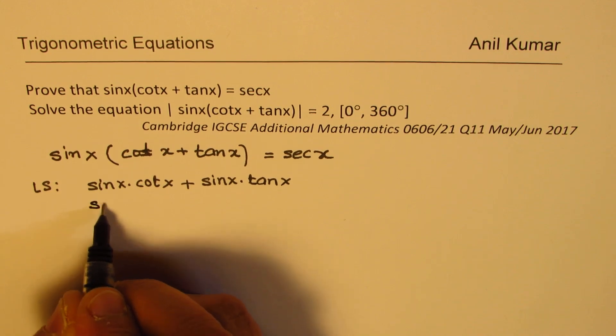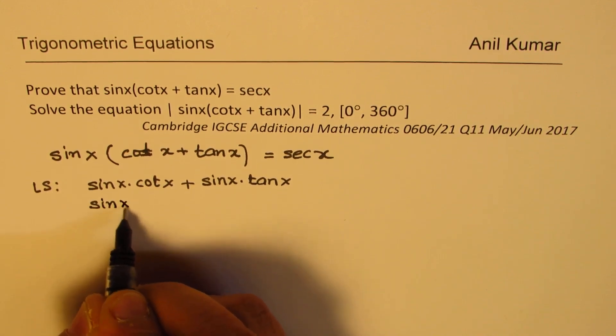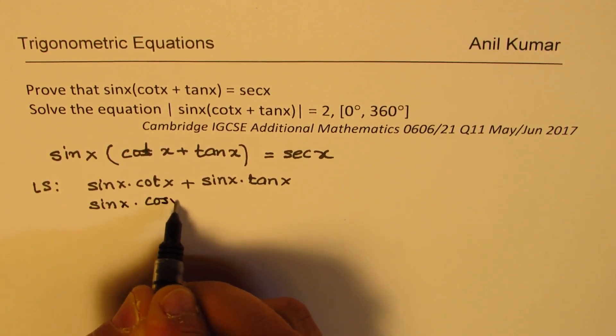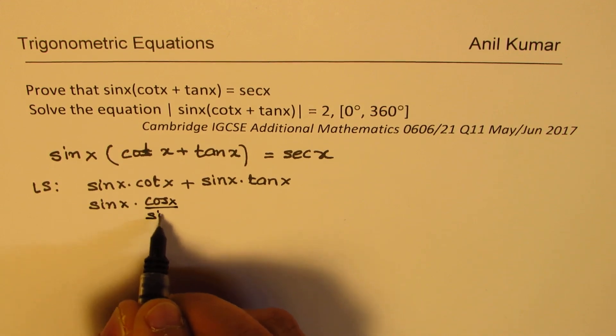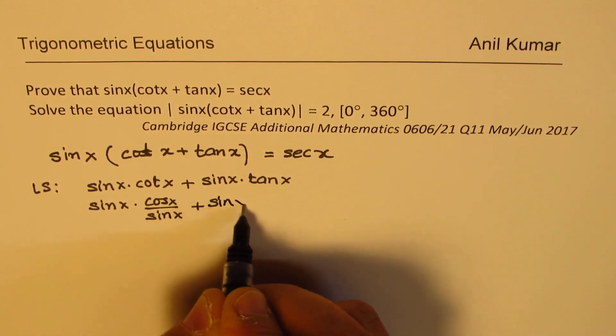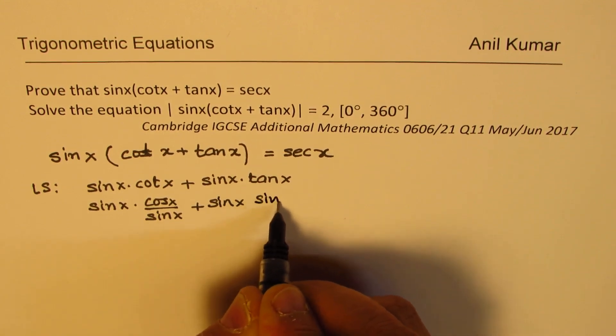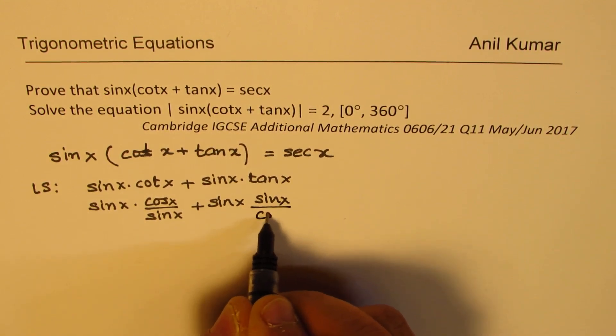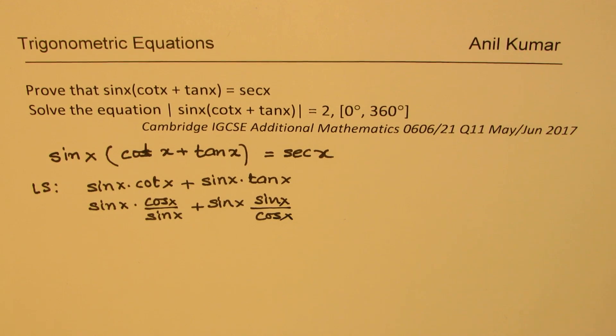cot is basically cos over sin, right? And tan x is sin x over cos x. So from here, we can cancel sin x and sin x on the left side.